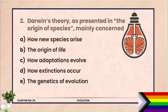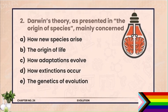MCQ 2. Darwin's theory as presented in the Origin of Species mainly concerned (A) how new species arise, (B) the origin of life, (C) how adaptations evolve, (D) how extinction occurs, (E) the genetics of evolution. The correct answer is (A) how new species arise — ek nai species kis tarah se arise hoti hai. Origin of new species ka matlab ye tha, aur unke adaptations kis tarah se develop hote hain, so alpha correct option banta hai.